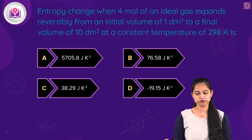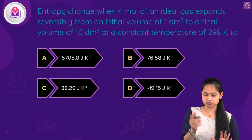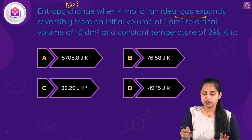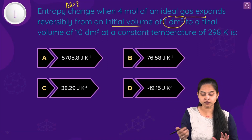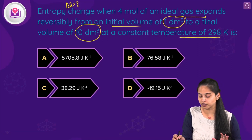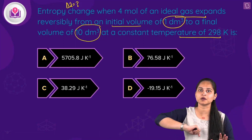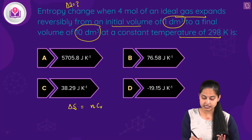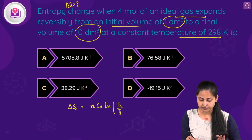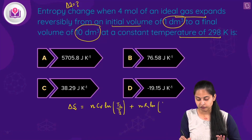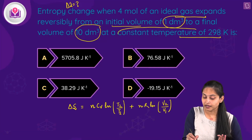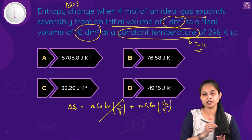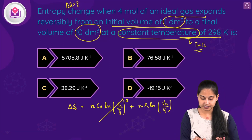The next question asks for the entropy change when 4 moles of an ideal gas expands reversibly from an initial volume of 1 dm³ to a final volume of 10 dm³ at a constant temperature of 298 K. This is an isothermal process. The expression for entropy change is ΔS = nCv·ln(T2/T1) + nR·ln(V2/V1).